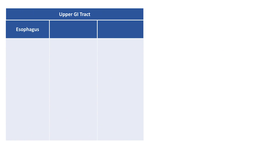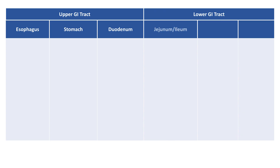The most obvious framework for GI bleed is one that is classified by organ systems, which are grouped as either upper GI bleeds involving the esophagus, stomach, or duodenum, or lower GI bleeds involving the jejunum and ileum, the colon, the rectum, and the anus.